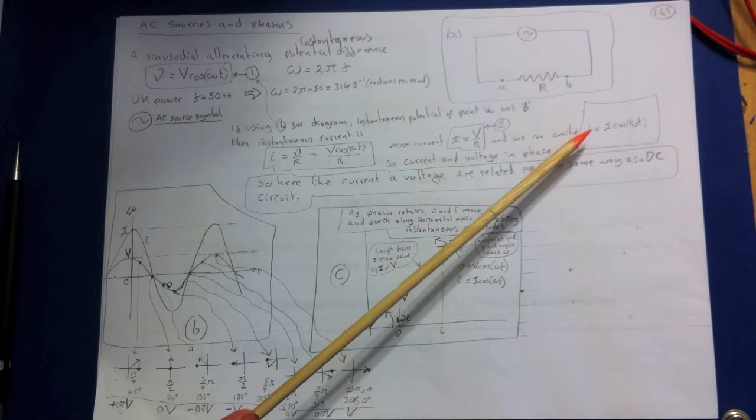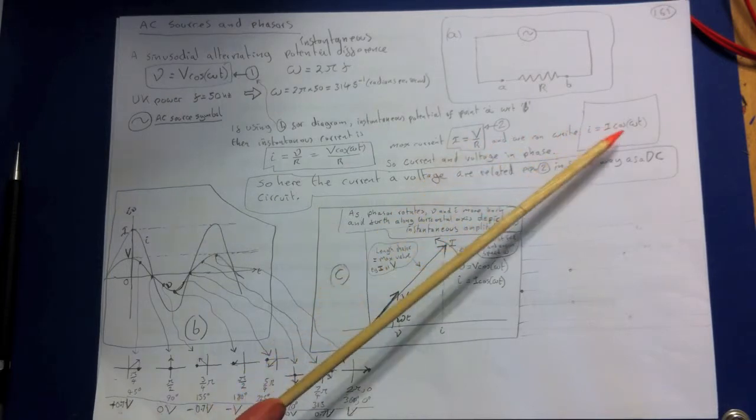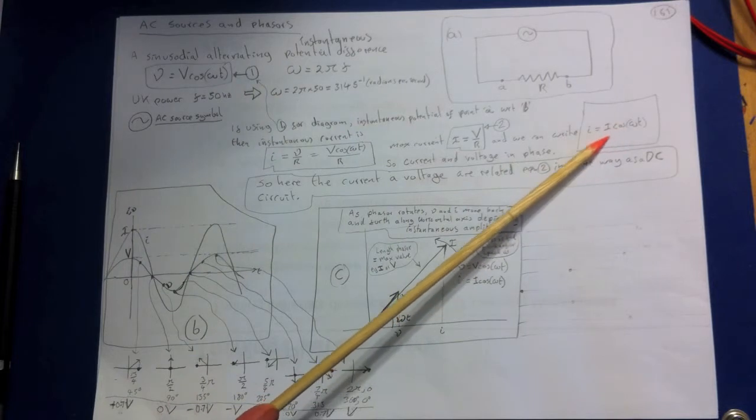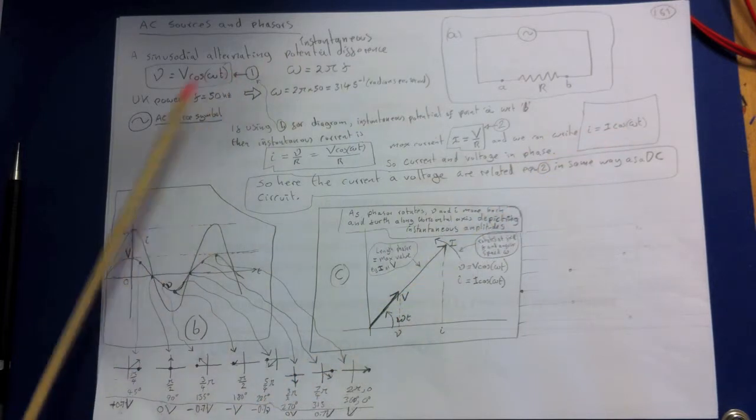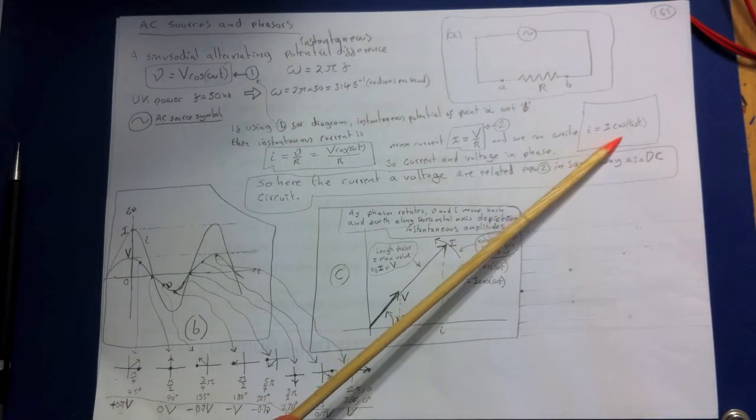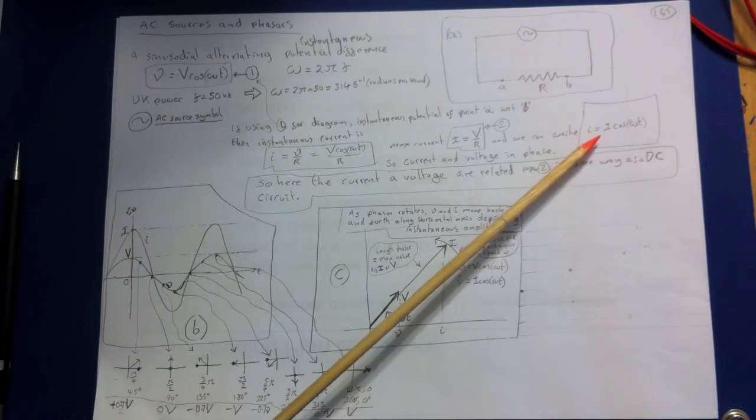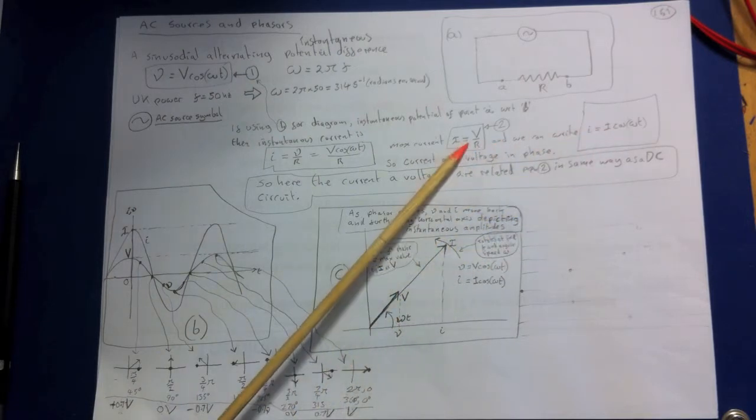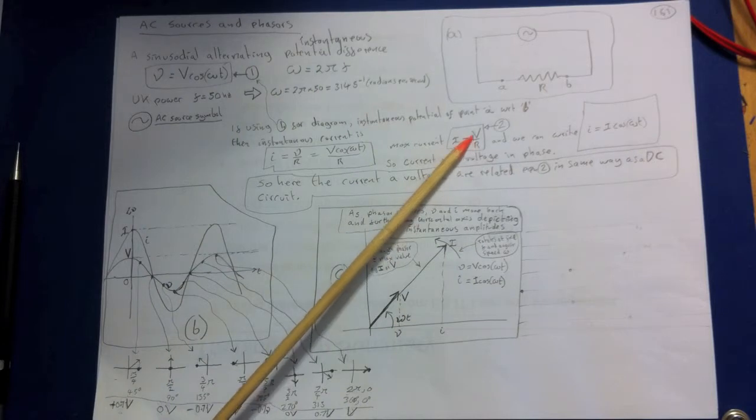We can just as well write the current as I equals I which stands for the maximum current and that's just a shorthand way of writing the current. So we've got the voltage and we've got this shorthand way of writing the current remembering that capital I means V over R the maximum voltage over R.